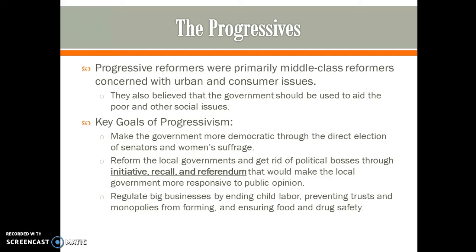Initiative was a bill that came from the American people. Recall is when voters removed a person from office they had voted in because they didn't think that person was doing a good job. Referendum is when voters added on to bills that had already been passed. Lastly, progressives wanted to regulate big businesses by ending child labor, preventing trusts and monopolies — those big businesses that beat out smaller competitors — and ensuring food and drug safety.